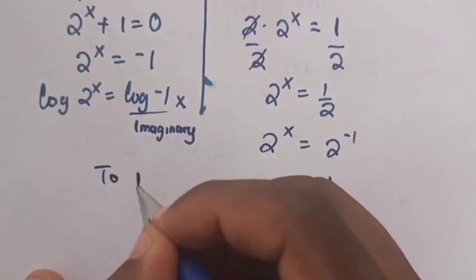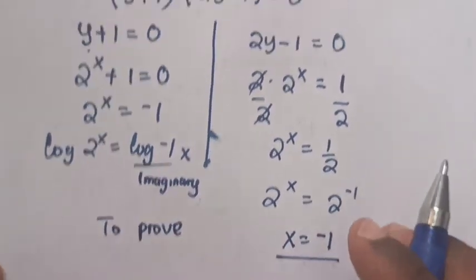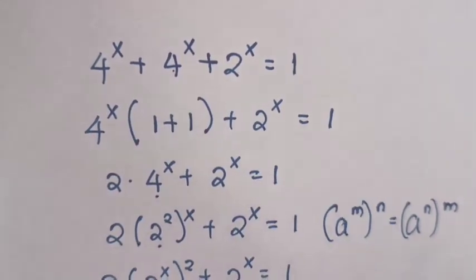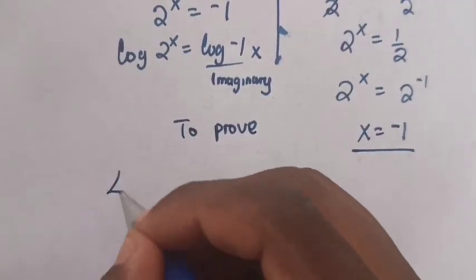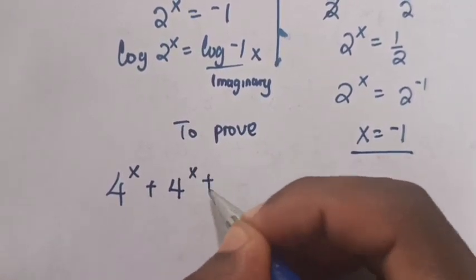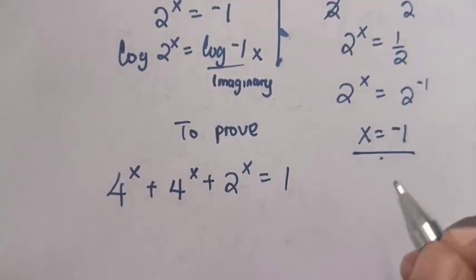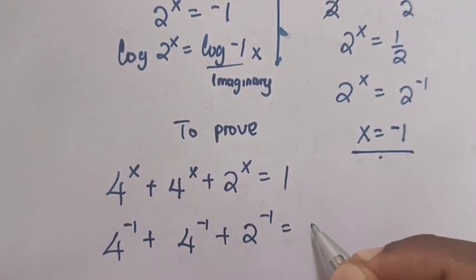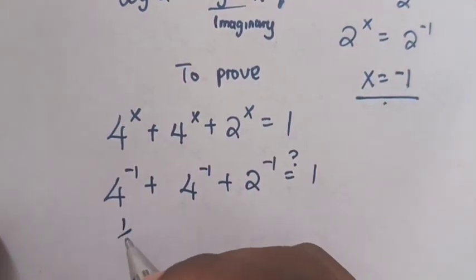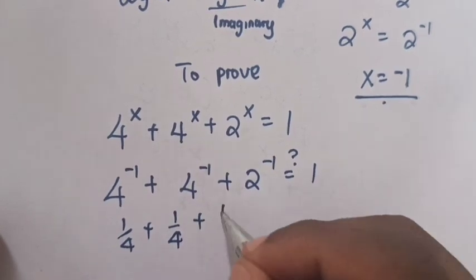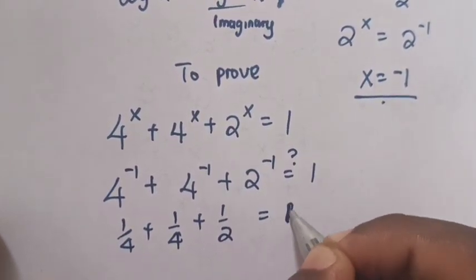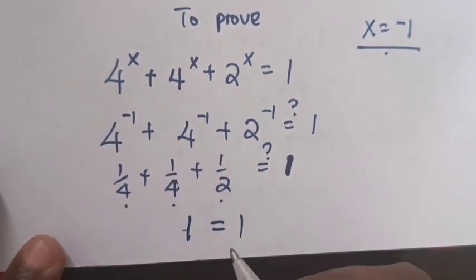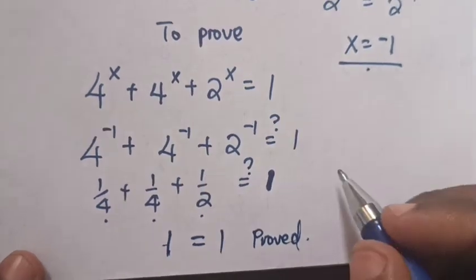To verify that x equals negative 1 is correct, we substitute back into the original equation: 4 power negative 1 plus 4 power negative 1 plus 2 power negative 1 equals 1. This gives one quarter plus one quarter plus one half equals 1, which is true. So 1 equals 1, and the answer is confirmed: x equals negative 1.